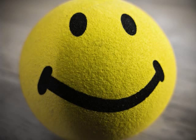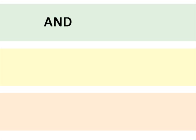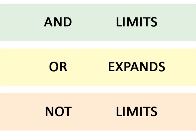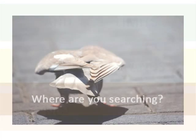AND, OR, and NOT work the same way in library databases. AND will only find articles that contain the words or phrases in both search boxes. OR will find articles that have either one or both of the words or phrases. NOT will not retrieve any articles found with the second term, even if the first happens to be in it.